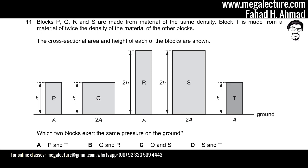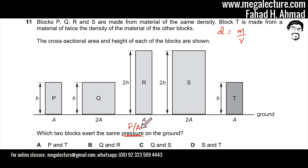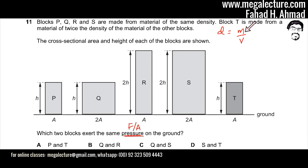We're going to calculate the pressure on the ground for each block. I'll assume the density is D, where D is mass over volume. The formula for pressure is force over area. The cross-sectional areas are given for each block, so I just need to substitute them. To find force I need the weight, and to find weight I need mass — mass times gravity gives weight.